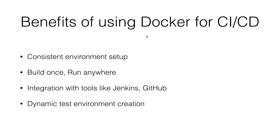Docker has very good integration with tools like Jenkins and GitHub, through which we can automate our CI-CD pipeline and do a complete end-to-end deployment. We can dynamically create test environments with Docker, which is pretty fast. We can have a VM or bare metal with Docker installed, deploy the application there, or configure a Docker Swarm cluster. Things can move pretty fast if we use Docker for CI-CD.